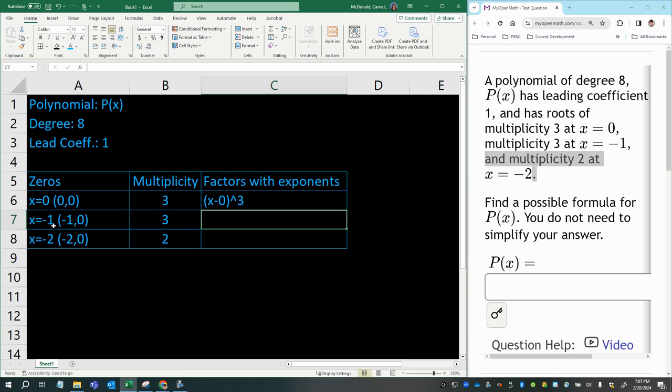Now we can take this other root, or this other zero at x equals negative one, and create another binomial factor, x minus negative one. And I forgot to mention, for this one, it simplifies to just x, because x minus zero is simply x. So we can get rid of that. And then we don't even need the parentheses anymore. So x to the power of three.